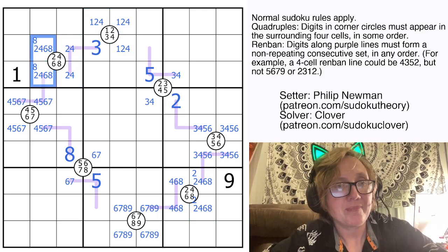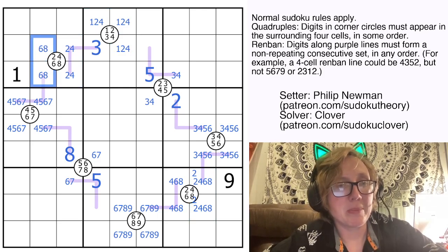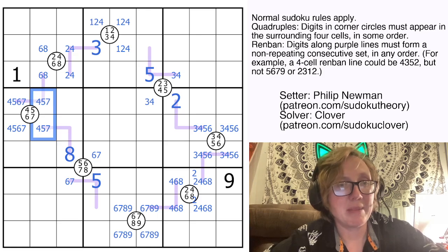So I'm going to eliminate 3 here, and eliminate 2 and 4 here, leaving me with a 6-8 pair, and now I can eliminate 6 here.